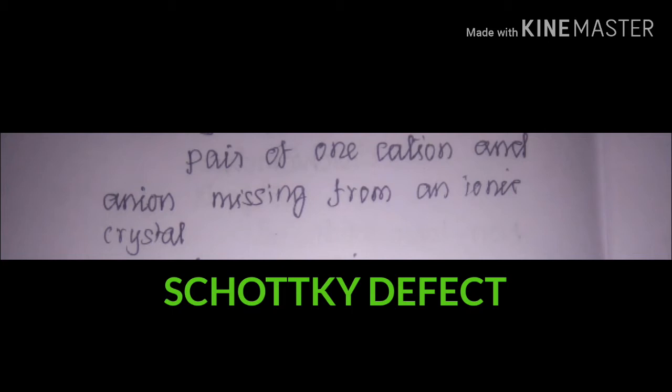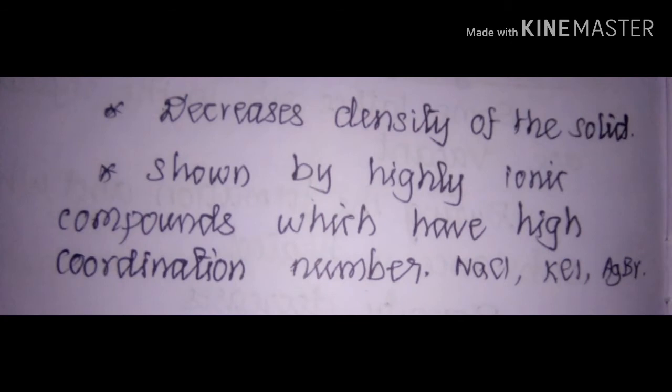In the Schottky defect, a pair of cation and anion is missing from its ionic crystal, leaving the original position in the lattice point vacant. Schottky defects are formed during crystallization and also while heating the crystals. Since there is a vacant site, the density of the crystal decreases. It is shown by highly ionic compounds with high coordination numbers.